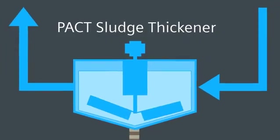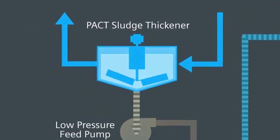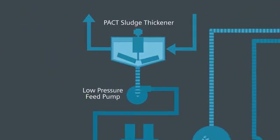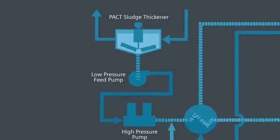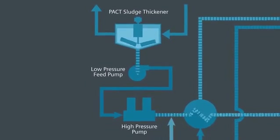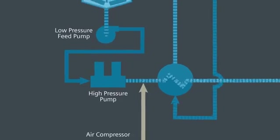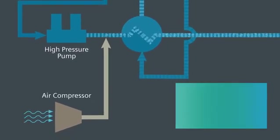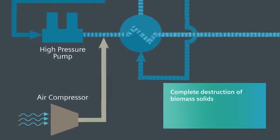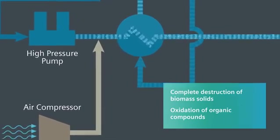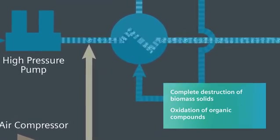Wasted biomass and carbon are transferred from the sludge thickener to the Wet Air Regeneration High Pressure Pump. High pressure air is injected to provide oxygen for complete destruction of biomass solids and oxidation of organic compounds adsorbed into the powdered carbon.